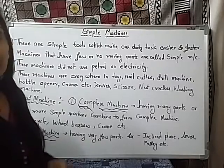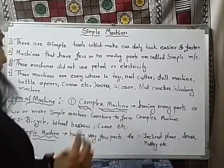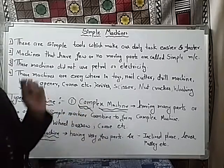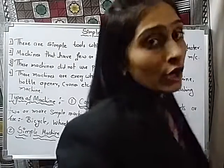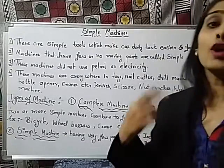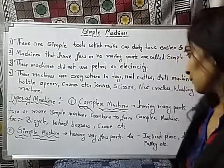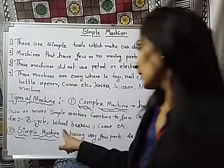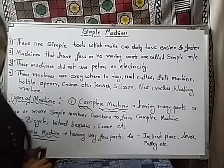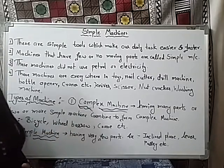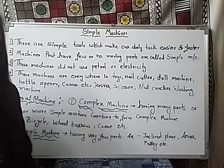Further we are going to learn in descriptive manner what these simple machines are. The second type is called the complex machine. Complex machines have more parts, or they may be the combination of two or more simple machines, which makes our day to day life very easier. For example, wheelbarrows, bicycles, and cranes are machines made up of two or more simple machines, so they are called complex machines.